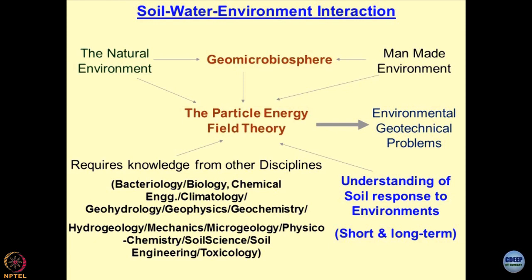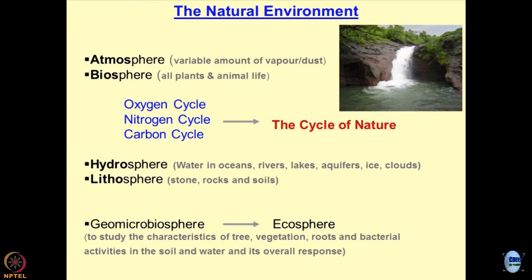This is what I am trying to do — set the tone for the discussion on soil-water-environment interaction. If you try to understand what is meant by the natural environment, whatever nature has given us — beautiful streams of water — if you go about 10, 20, 40 kilometres away from Bombay city, you will find a very serene environment, particularly when it rains. This type of serenity is getting lost because of the genesis of environmental geomechanics we have talked about.